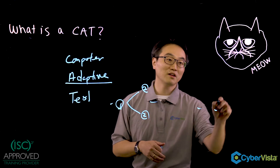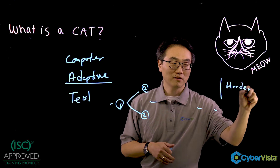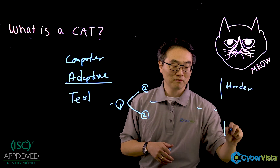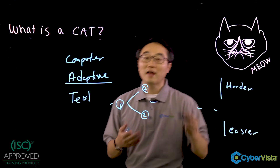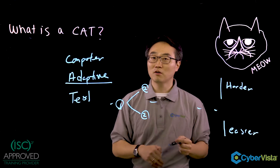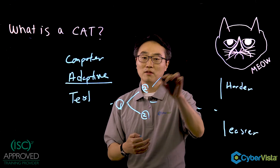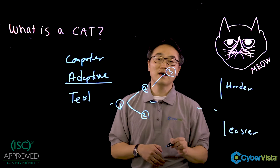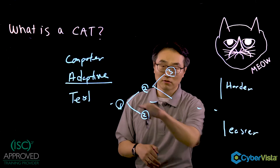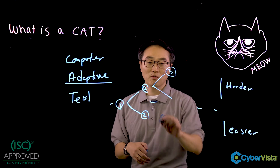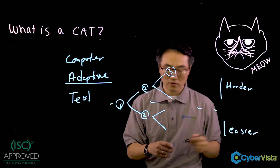So if this is the difficulty level — this is harder and this is easier — it adapts to how you're answering. After the second question, if you got it right, it might throw you a question that's slightly harder than that. And if you got that wrong, it might bring you back to the same level as before. That same branching happens over and over again.